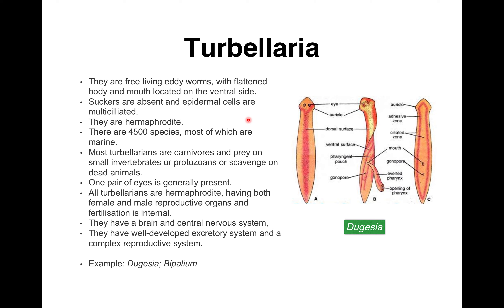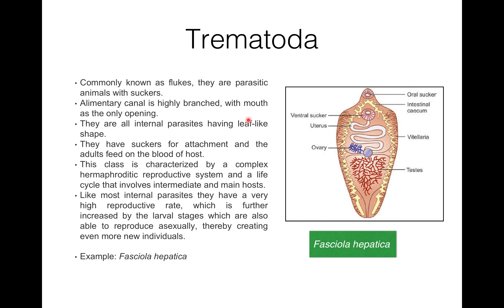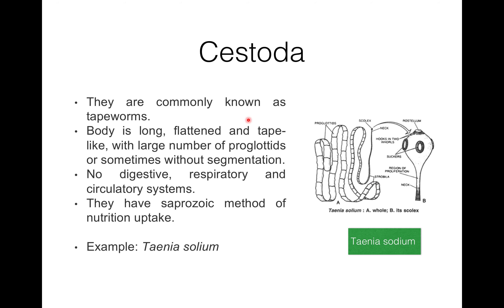Examples of the class Turbellaria include Dugesia, Bipalium, Leptoplana, Planocera, Stenostomum, and many more.